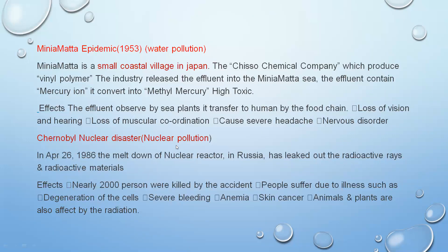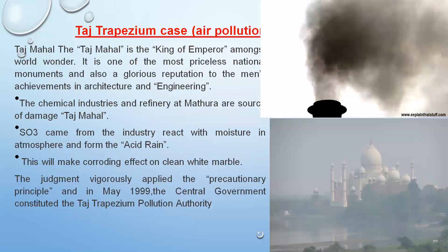The Chernobyl nuclear disaster is a nuclear pollution case study we have already discussed. In 1986, due to untrained employees, radioactive materials were mistakenly leaked, creating harmful radiation. Nearly 2,000 people were killed by this nuclear disaster. Nuclear pollution causes degradation of cells, mutations, anemia, and skin cancer, and plants and animals were also affected by this radiation.